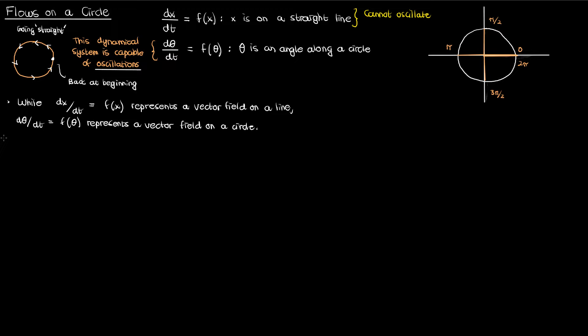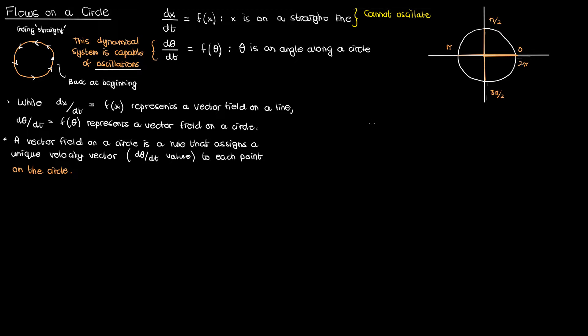Let me define what a vector field on a circle is, because there's a bit of nuance here that's missed in the discussion on dx/dt. A vector field on a circle is a rule that assigns a unique velocity vector, or dθ/dt value, to each point on a circle. It's basically a function — for every input θ there must be one and only one output velocity vector. So for a function f(θ) to be considered a vector field on a circle, it must be a 2π-periodic function.